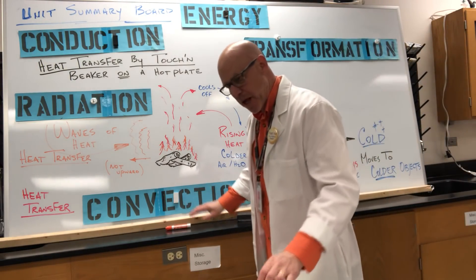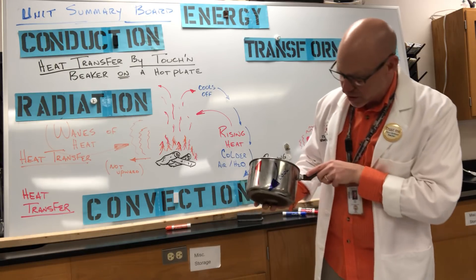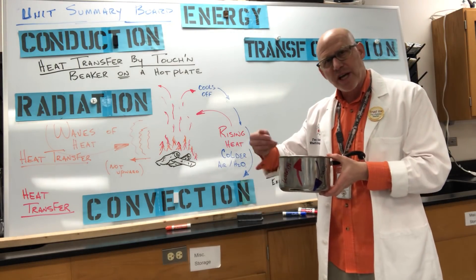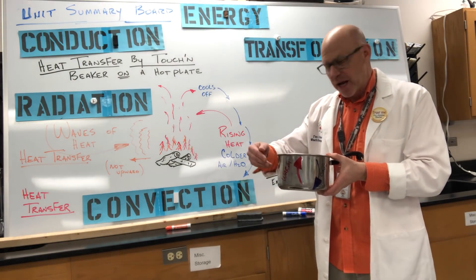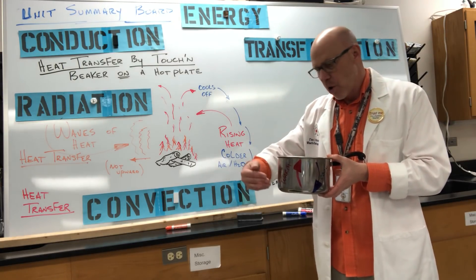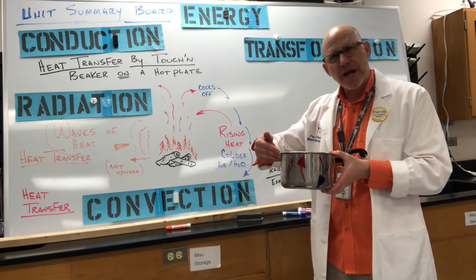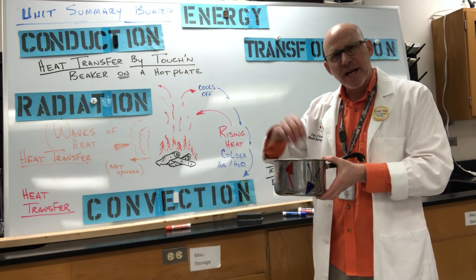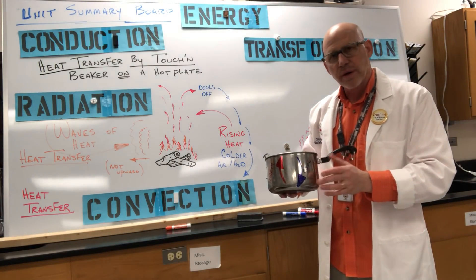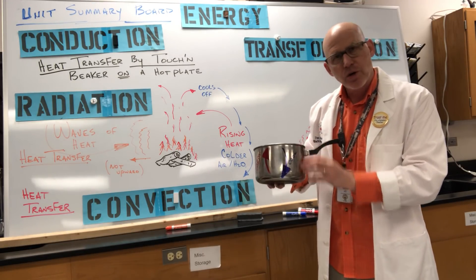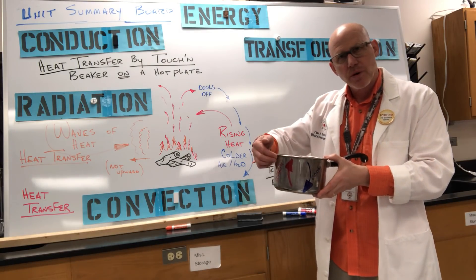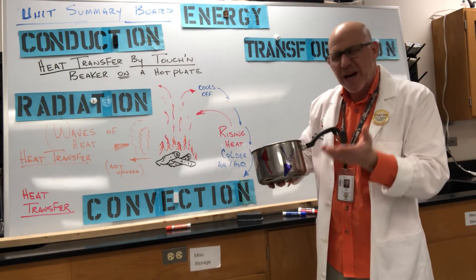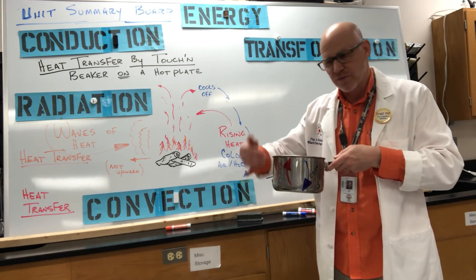One more thing about convection — somebody asked what if you boil water? If you were boiling water, that water moving in your pan is going to create a convection motion where the warmest water on the very bottom is going to rise to the top. Some of that heat escapes and the cooler water — maybe just one or two degrees cooler — goes to the bottom, warms up, and rises back to the top of the pan. There is definitely a motion of boiling water.